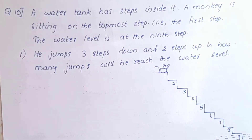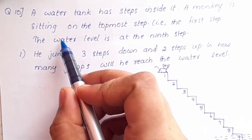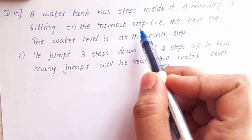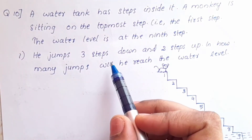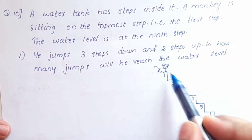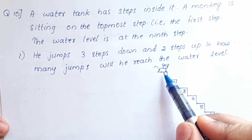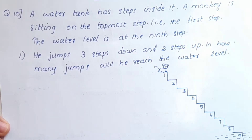This is Exercise 1.1, Question number 10. A water tank has steps inside it. A monkey is sitting on the topmost step, that is the first step. There are 10 steps total and the water level is at the 9th step.